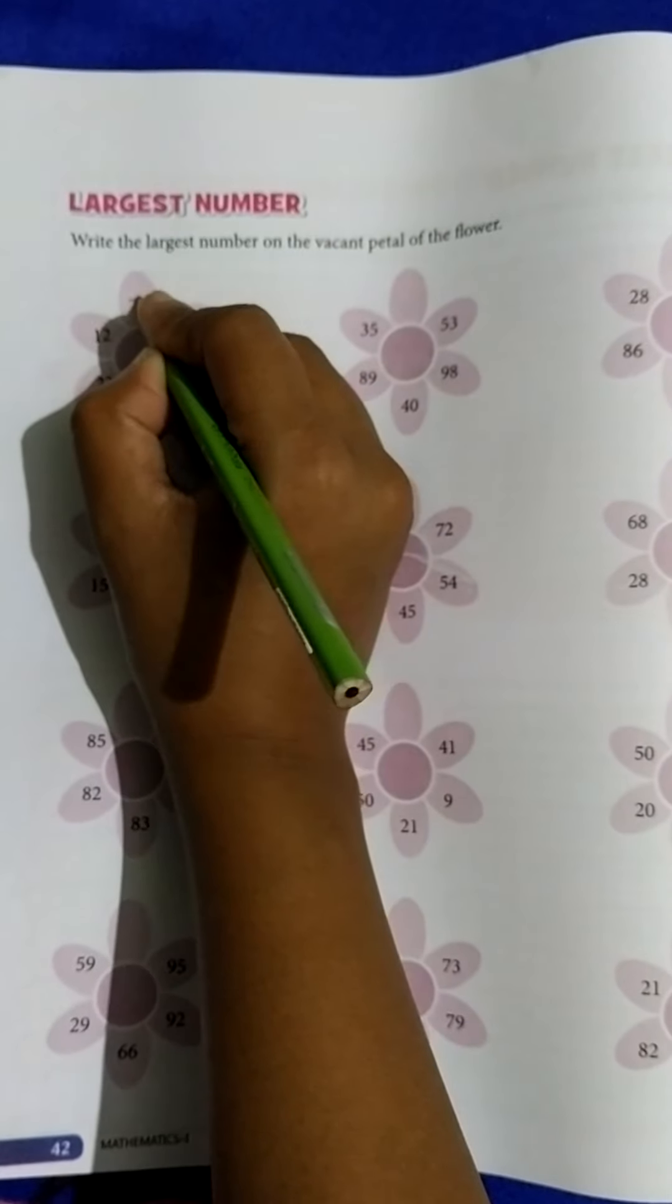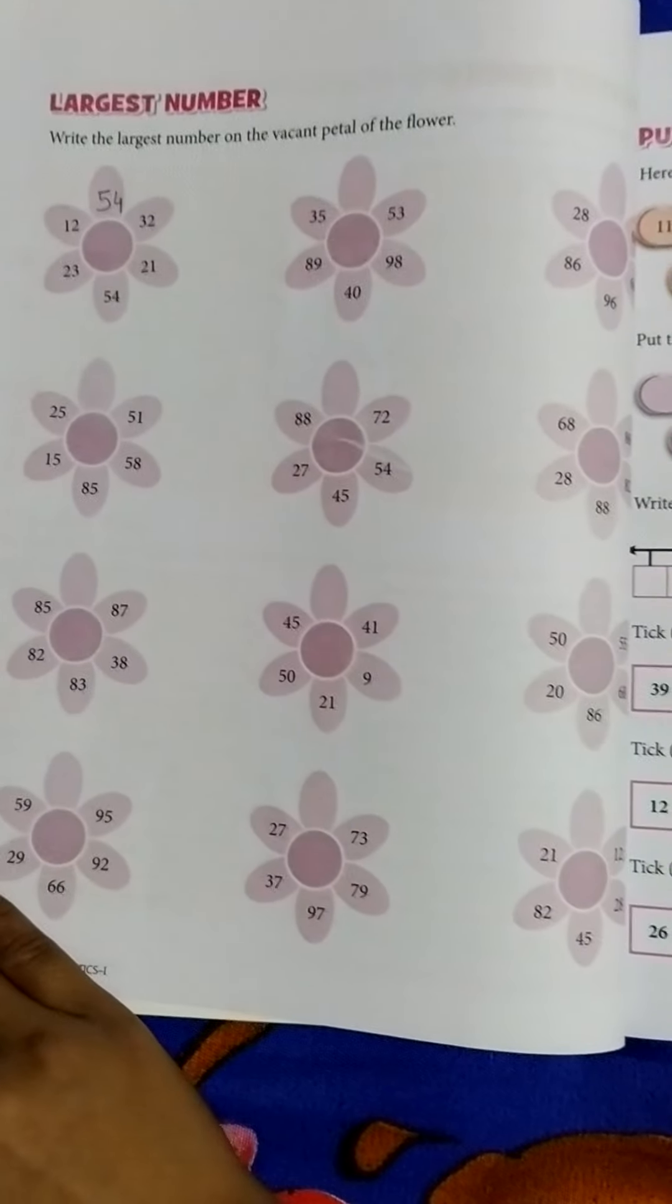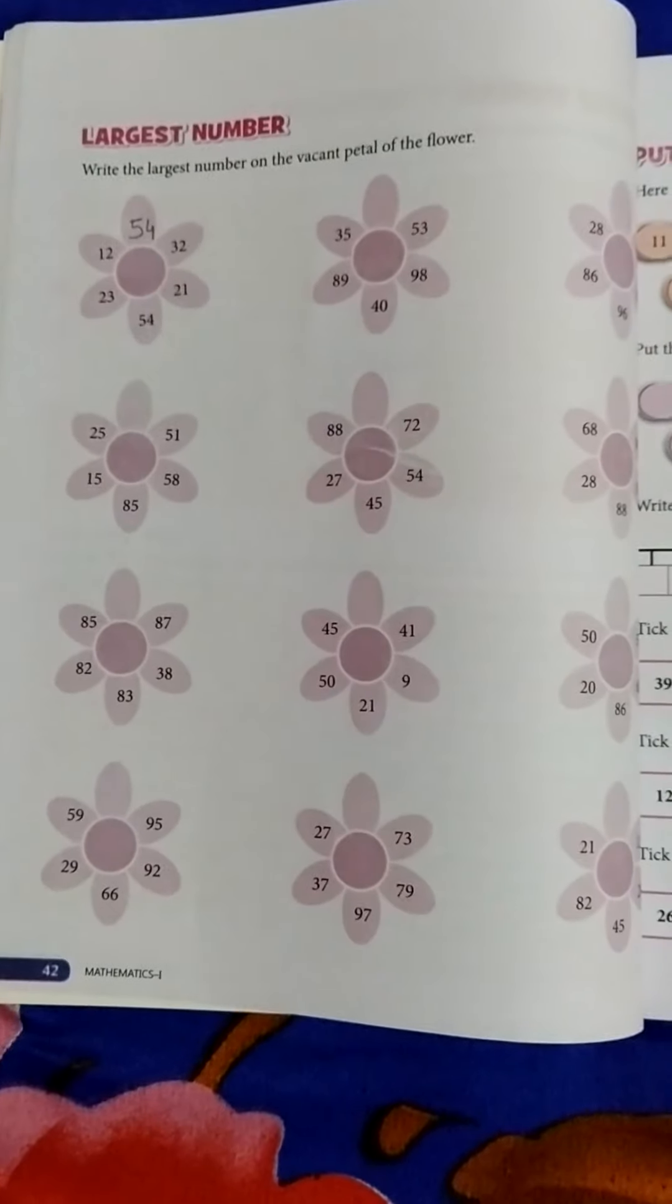54. 54 is the largest number, then write here 54. I hope you all understand. Do both exercises. Okay, thank you.